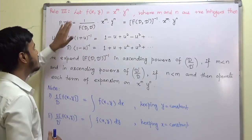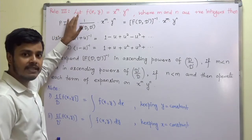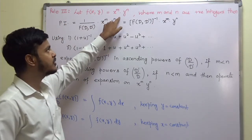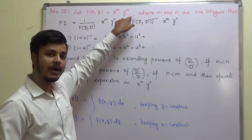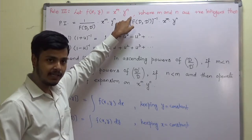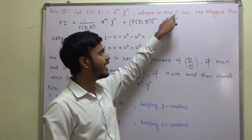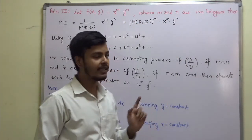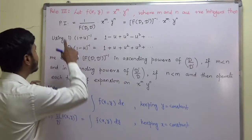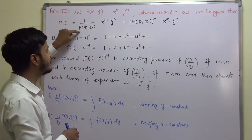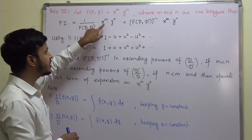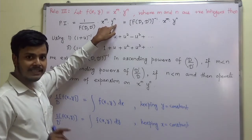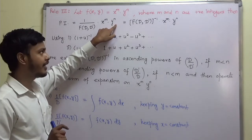Rule number 3 says if you have your f of xy as x to the power m into y to the power n, where both m and n are positive integers, then pi is equal to 1 upon f of D, D-dash into x to the power m by y to the power n. That is the pi.